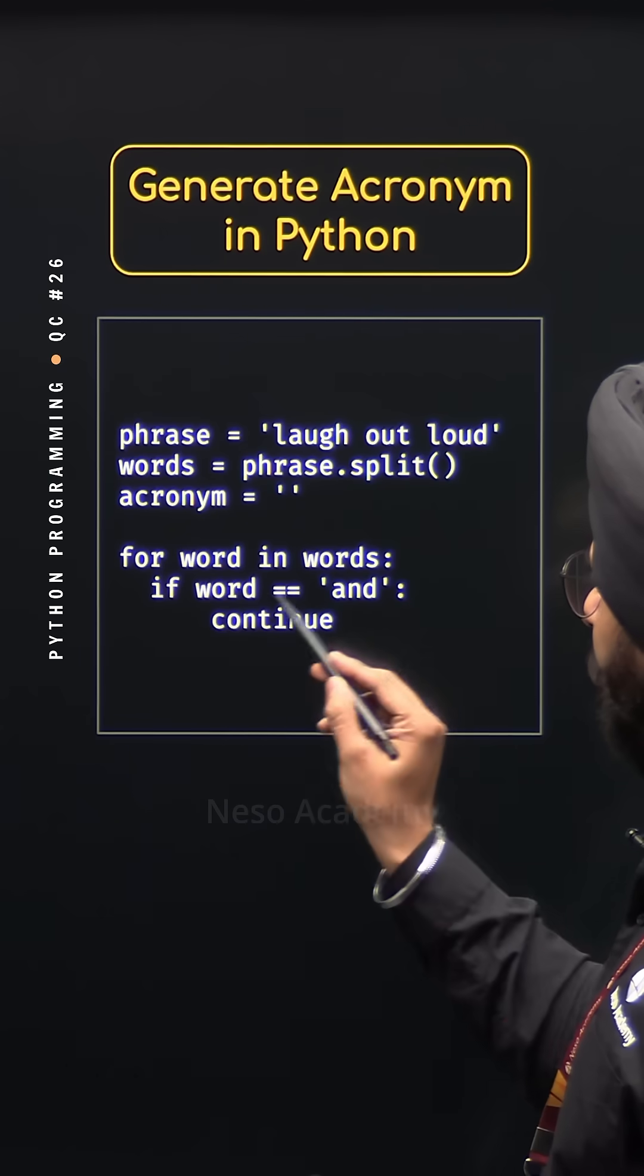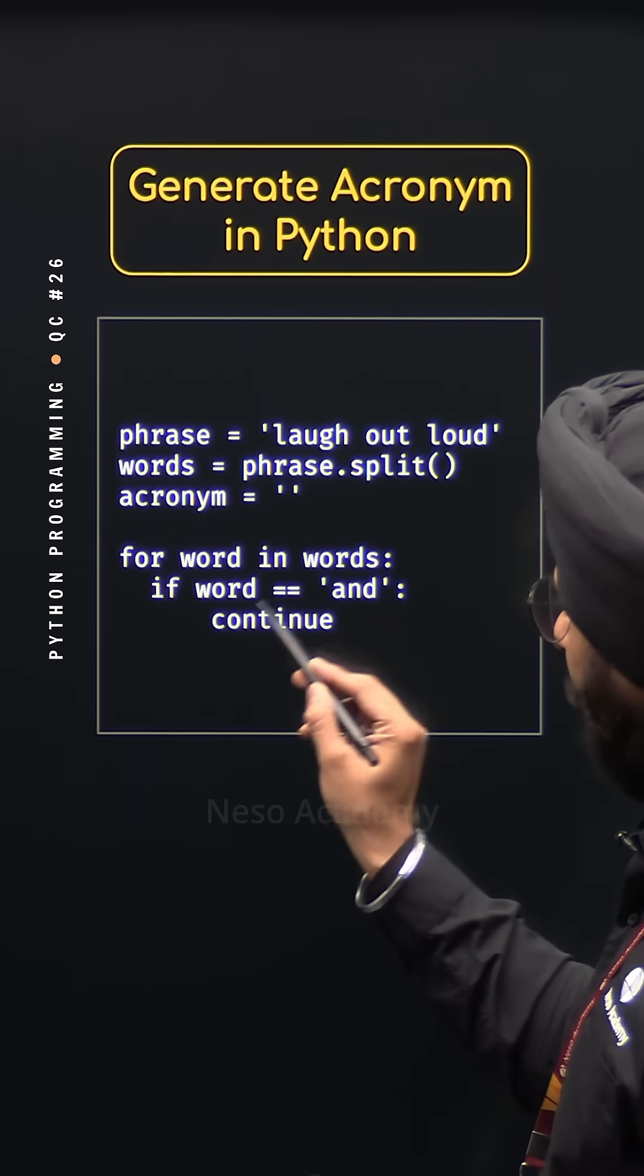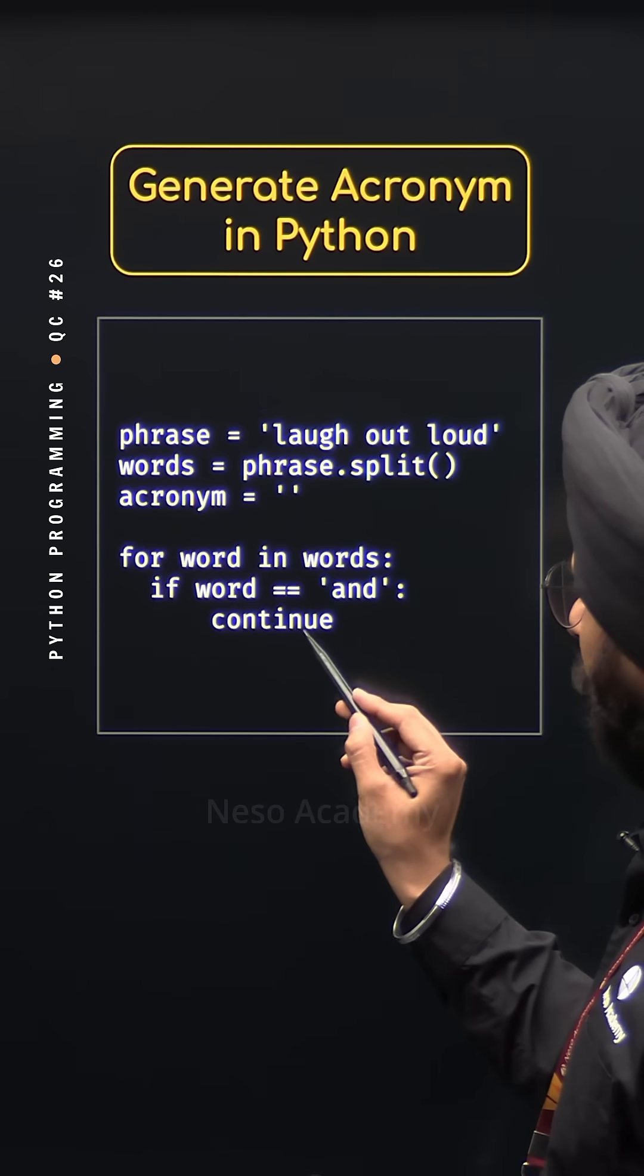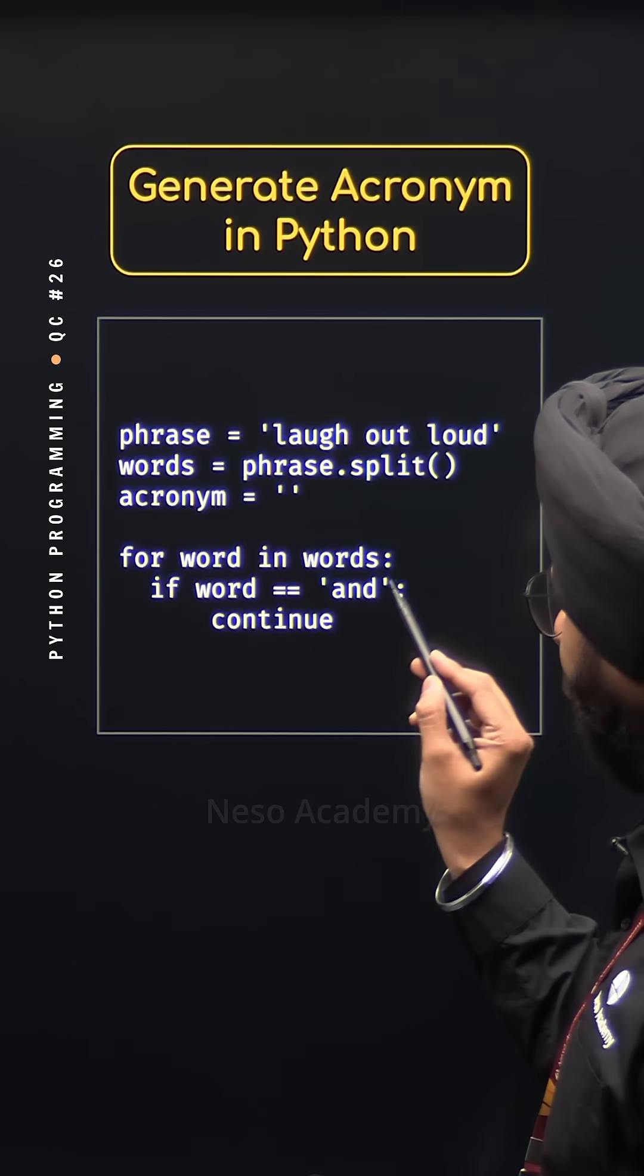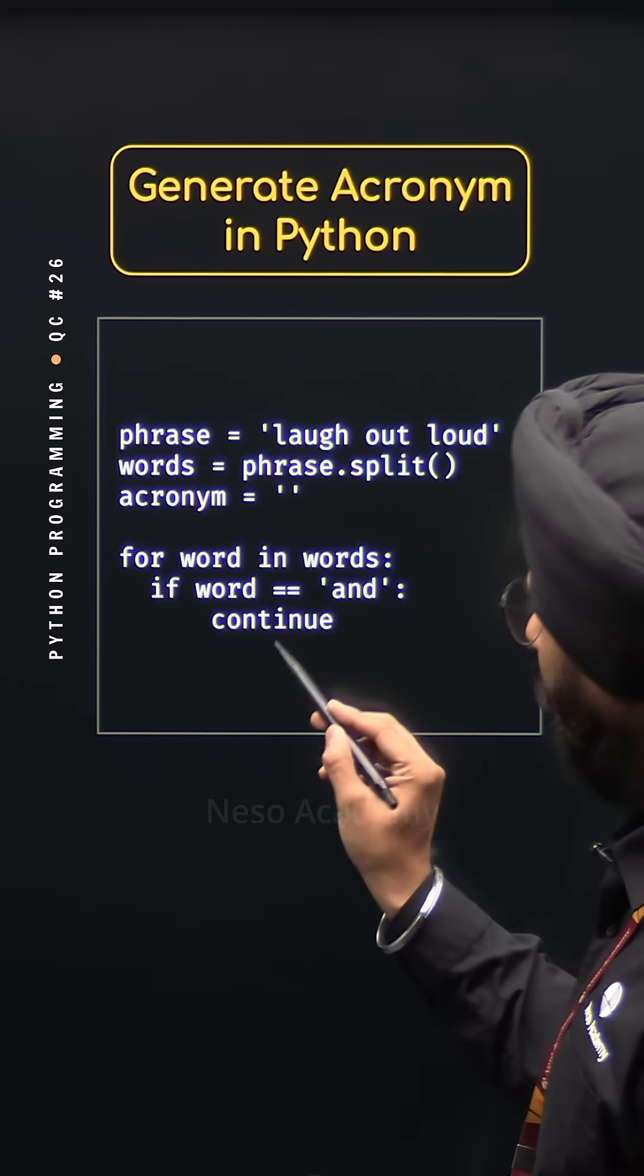Then we need to check if word is equal to and. If word is equal to and, then we will continue. This means we will skip and from the phrase because we do not want to consider it.